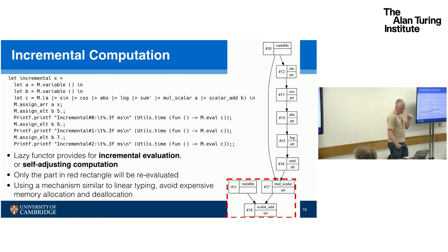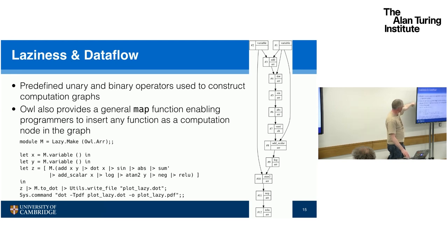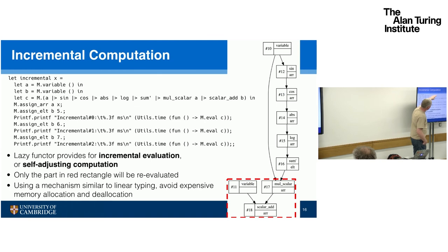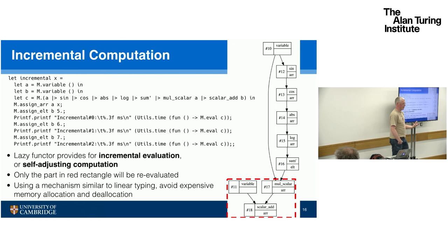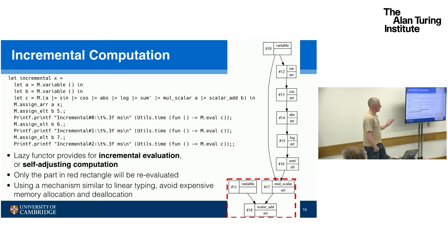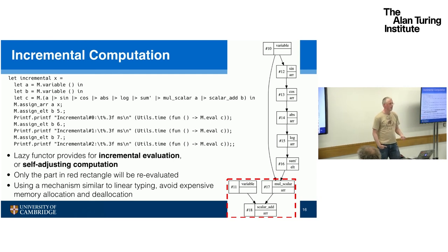It's got facility for incremental computation. Because of the laziness involved, when you redo the evaluation — there's m.eval here, where m is the lazy computation module — as data flows through and the computation is carried out, when you change the values, there's enough bookkeeping in the code generated that it knows it only needs to recompute this part of the computation and the rest is not going to change. This sort of incremental evaluation helps to make things efficient. In particular, you're not doing memory allocation and deallocation when you don't need to — you're only looking at the things that are actually changing as a result of the inputs changing.